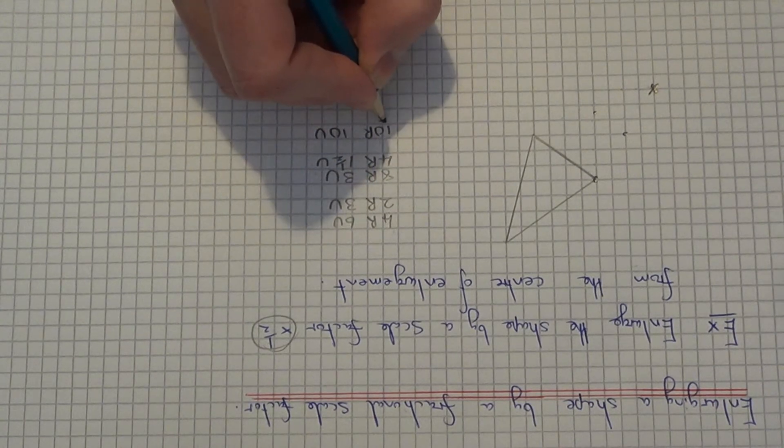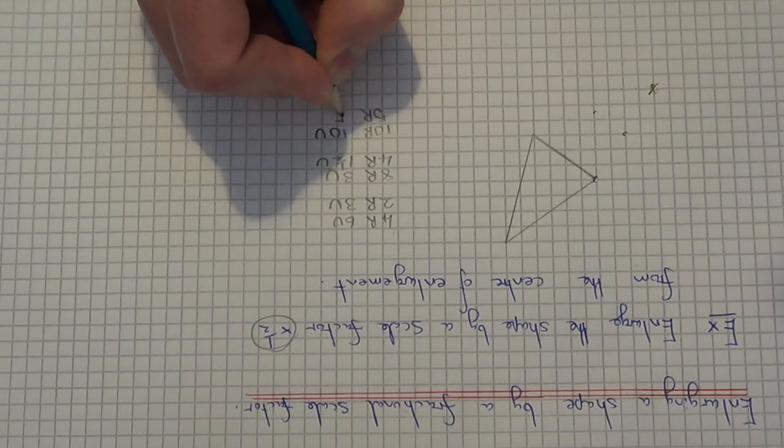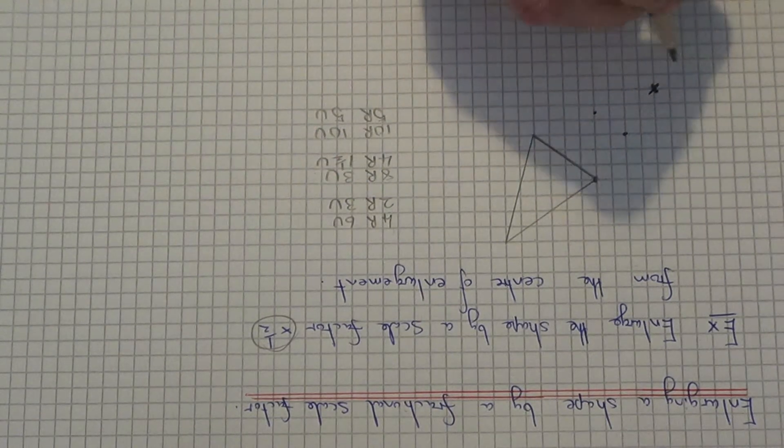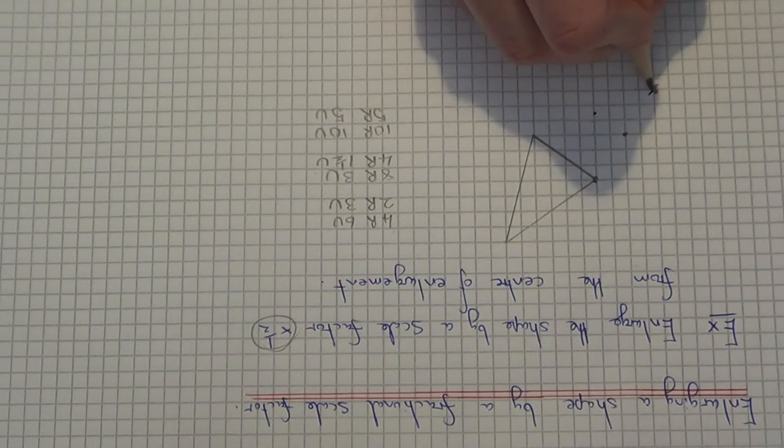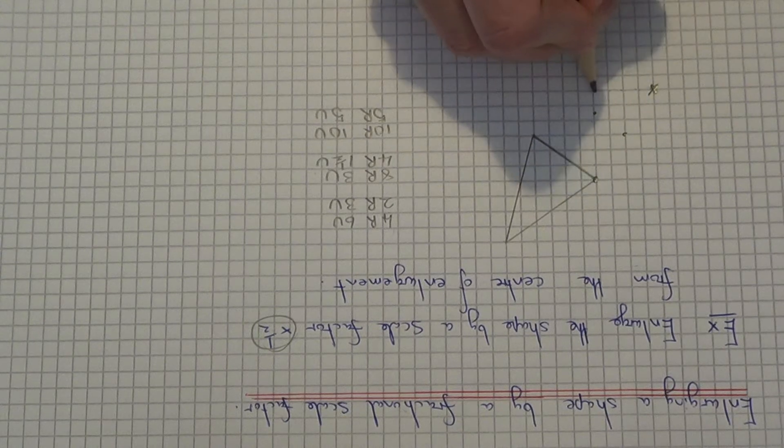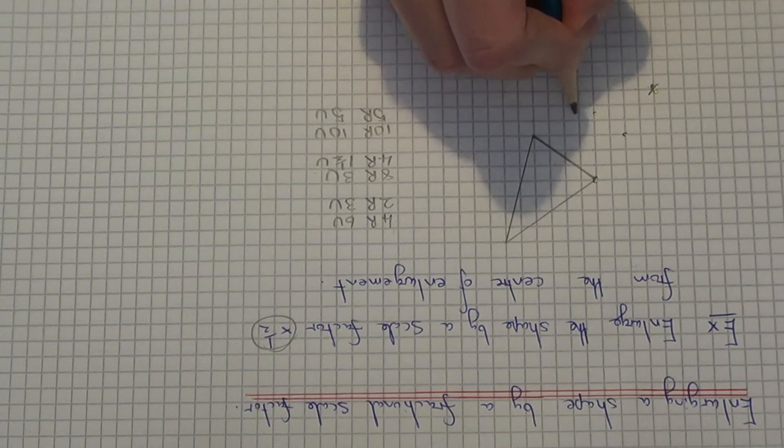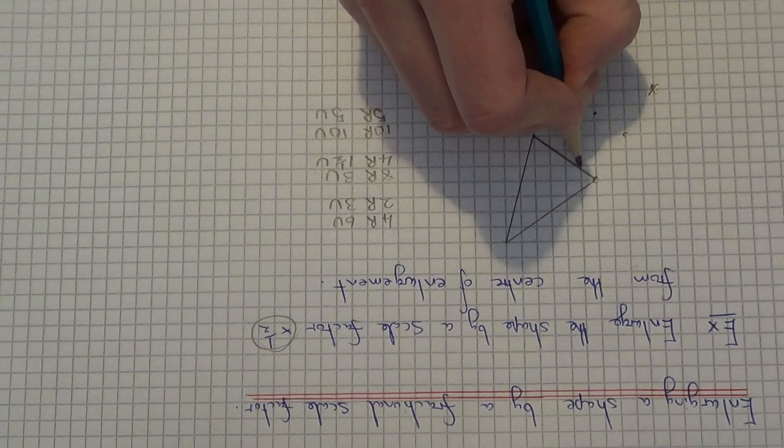So half the distances, so it should be 5 right and 5 up. So count the new distances from the centre.